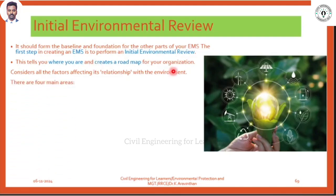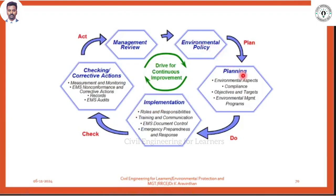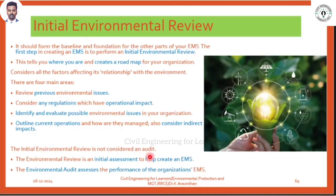What are the things to be considered in the initial environmental review? Review of previous environmental issues, considering the regulations and the operational impact. After doing the full EMS cycle — policy, planning, implementation, checking, corrective actions — there will be a management review. After this review, you need to conduct an initial environmental review by taking the report from the management review, considering regulations and operational impact, identifying and evaluating possibilities, and setting targets for the next year.